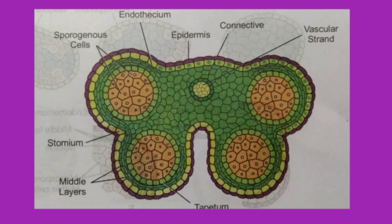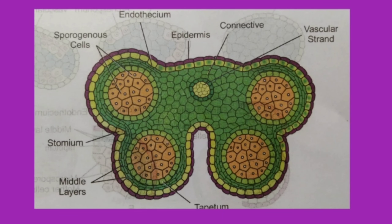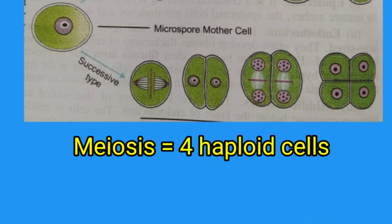The most important layer of cells present in the center of the microsporangium is the sporogenous cells. The sporogenous cells after mitotic division give rise to the pollen mother cell or microspore mother cell — MMC or PMC — which ultimately gives rise to the microspores or pollen grains. The sporogenous tissue present in the center, after each division, gives rise to the microspore mother cell that ultimately produces the microspores.